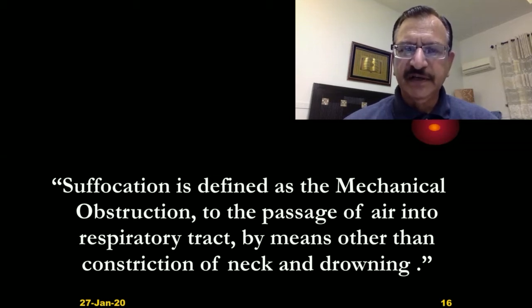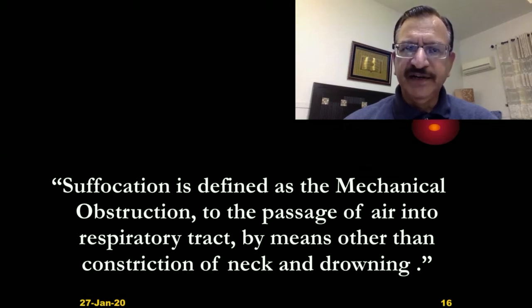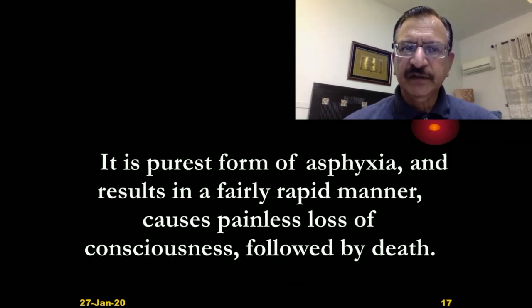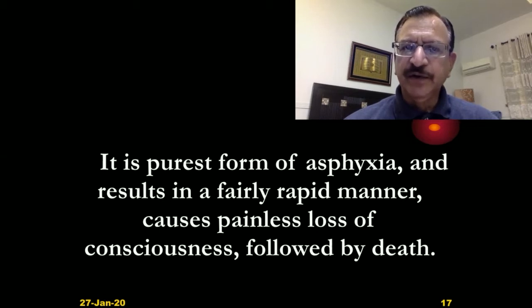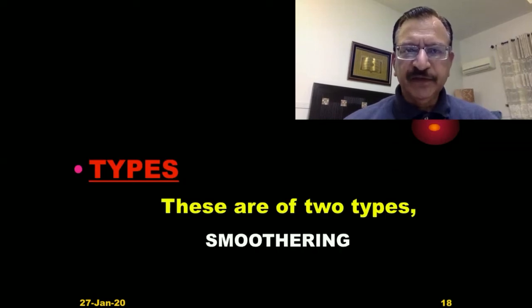The entry of air into the respiratory passages is prevented by occlusion or obstruction at the point of entry. It is called the purest form of asphyxia. It results in a fairly rapid manner and causes painless loss of consciousness followed by death. Its types are smothering and overlaying.